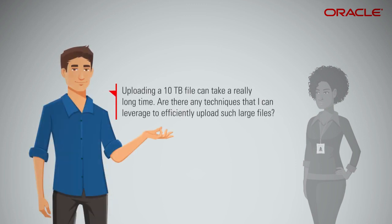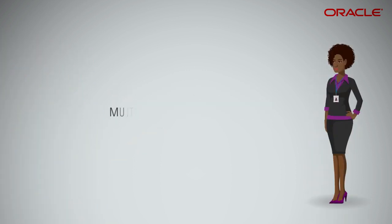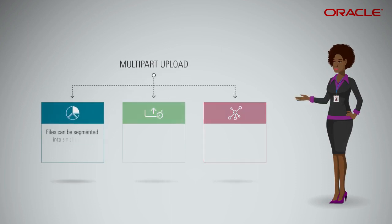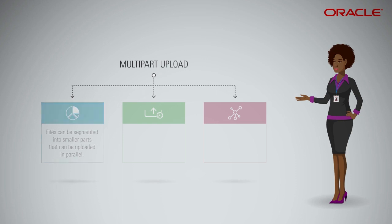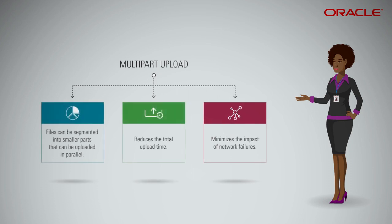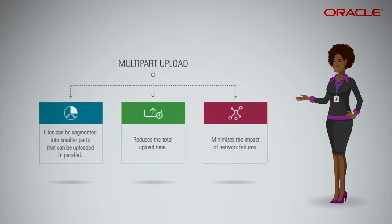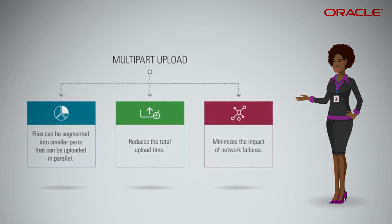Uploading a 10 terabyte file can take a really long time. You can use the Multipart Upload feature to efficiently upload large files. You can segment your file into smaller parts and then upload these parts in parallel. Object storage supports up to 10,000 parts per file, and a part can be as small as 10 MB. Using Multipart Upload not only significantly reduces the upload time, but also minimizes the impact of network failures. If a part fails to upload, you can retry just the failed part instead of uploading the entire file.